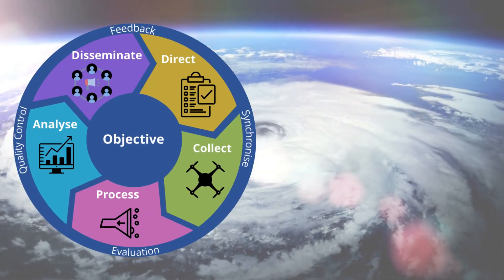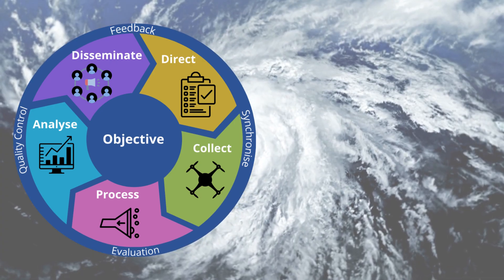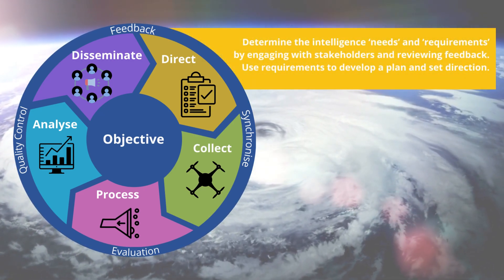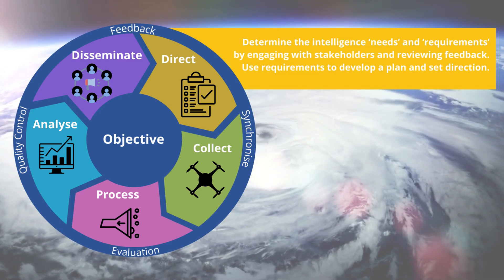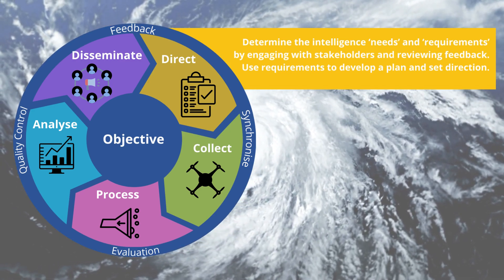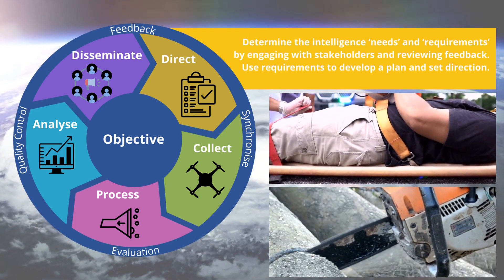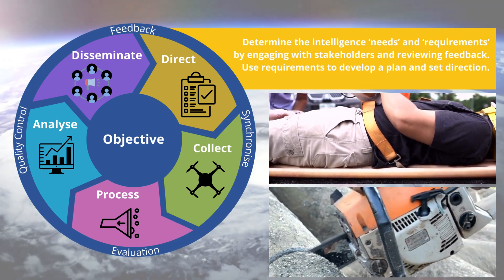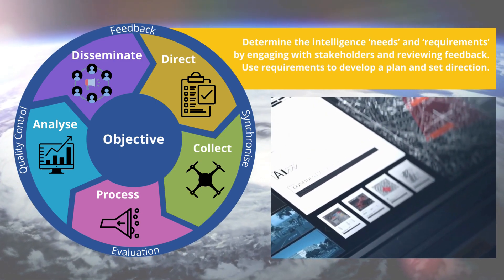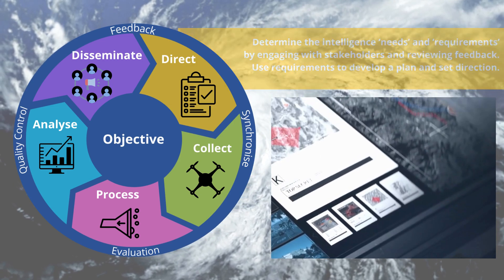Now we will explain the intelligence cycle, as we illustrate its application in the wake of a devastating hurricane event. First, you've got the direction step. This phase defines and prioritises the intelligence needs, setting the course based on specific objectives and requirements. In the aftermath of a hurricane, this could include both the response and recovery requirements, as well as understanding the security and safety concerns of both the public that's been impacted, as well as those providing assistance.